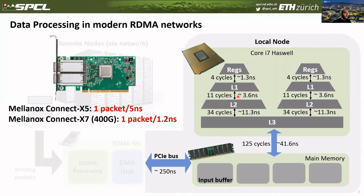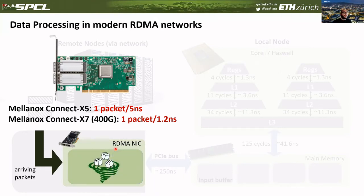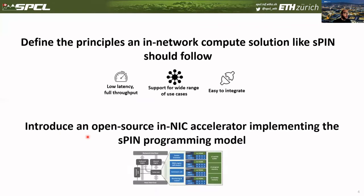The observation is that on this same system we already have a unit that is built for processing packets at these rates — the RDMA NIC. The SPIN programming model enables NIC programming. In particular, it lets applications define packet handlers that run directly on the NIC. In this work, we want to explore the architectural principles for network compute solutions like SPIN, and we also introduce PSPIN, an open-source in-NIC accelerator implementing the SPIN programming model.